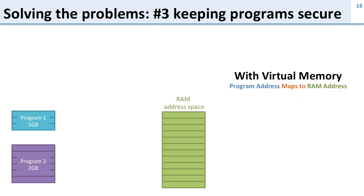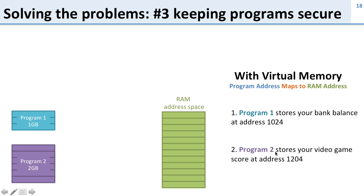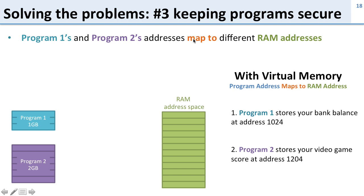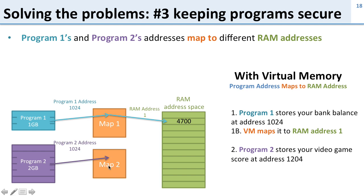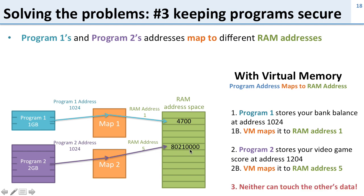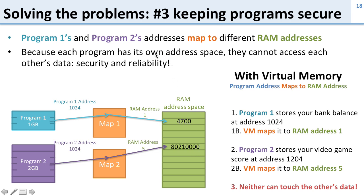Let's take a look at the third problem — keeping programs secure. Here's program one and program two. Program one is going to store your bank balance at address 1024 and program two is going to store your video game at address 1024. We use maps for them to put them in different RAM addresses. Program one goes to address 1024 and its map sends the data over here to RAM address one. Program two also tries to access address 1024 but its map sends the data to RAM address five. Now they write to different places — even though each one is trying to access 1024, they have different mappings that send them to different physical locations in memory and they don't overwrite each other. Neither one can touch the other, and as long as we don't map them over each other, they each have their own address space and can't access each other's maps.